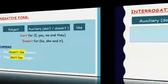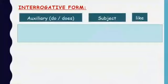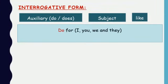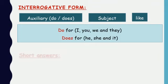For the question form, we start with the auxiliary 'do' or 'does' according to the subject, followed by the subject, then 'like'. 'Do' goes for I, you, we, and they. 'Does' goes for he, she, and it. Examples: do you like coffee? Does he like football? Do they like orange? Does it like bones?